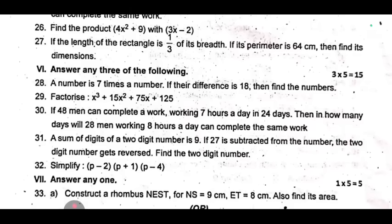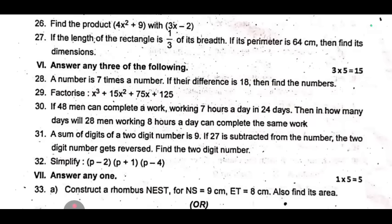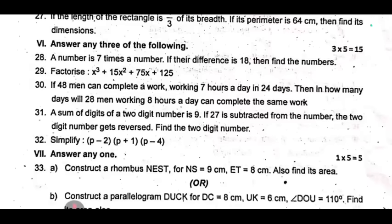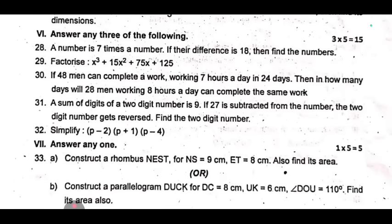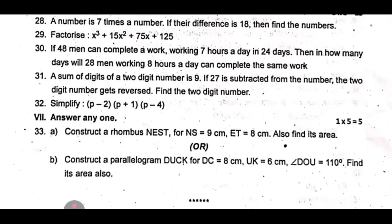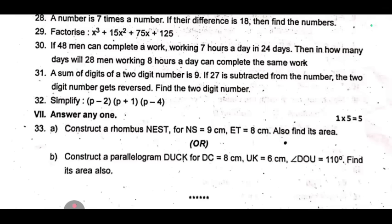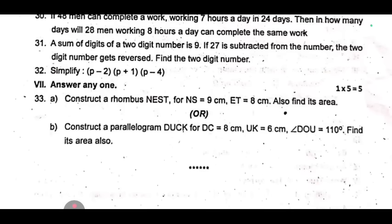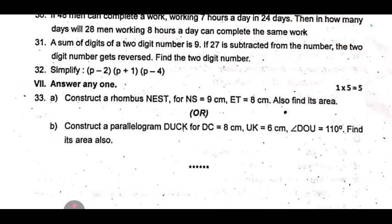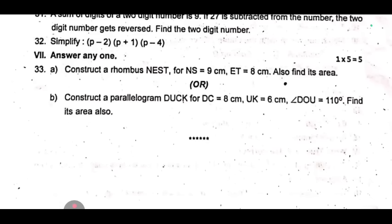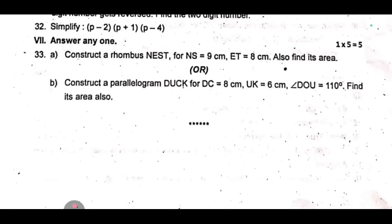Question 31: sum of digits of a 2-digit number is 9. If 27 is subtracted from the number, the 2-digit number gets reversed. Find the 2-digit number. Simplify (p - 2)(p + 1)(p - 4). Question 33a: Construct a rhombus NEST, for NS = 9 cm, ET = 8 cm. Also find its area. 33b: Construct a parallelogram DUCK for DC = 8 cm, UK = 6 cm, ∠DOU = 110°. Find its area also.